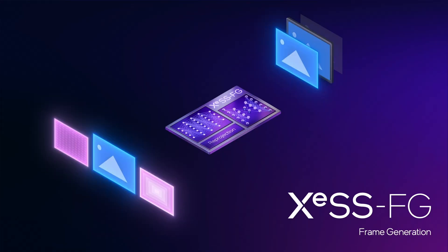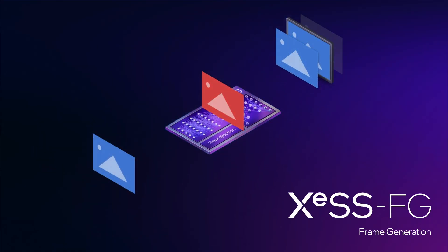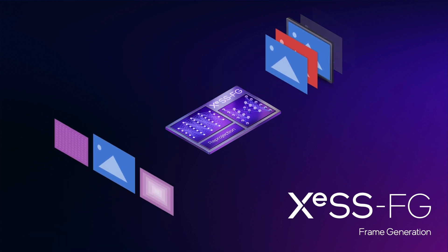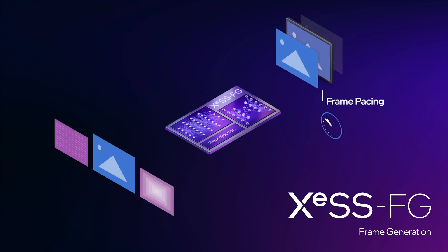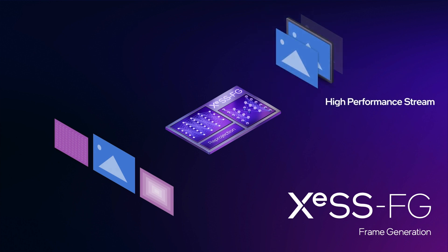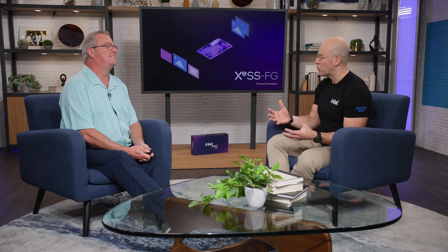Here's that algorithm in action: we're taking motion vectors and high-res frames in, synthesizing the frame using those dual networks. That generated frame gets inserted into the series of frames going to the screen, and we pace it so that the animation is smooth. It's a very neat, smart, and brilliant technology.